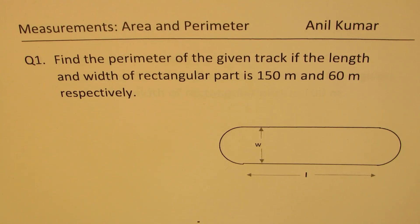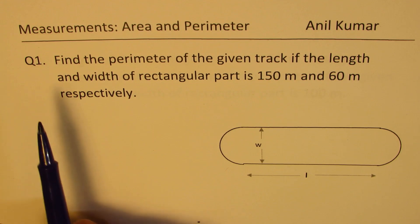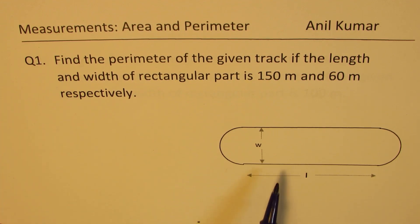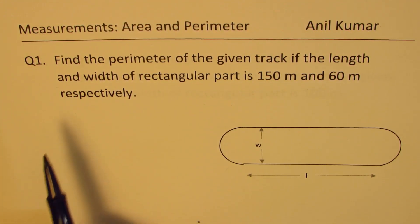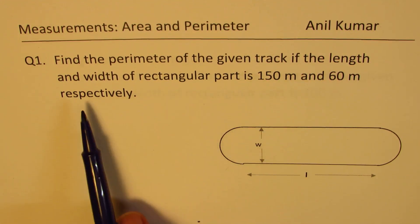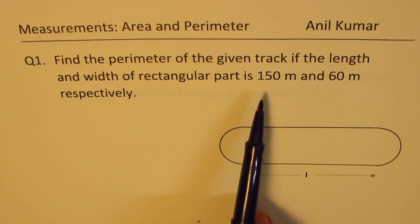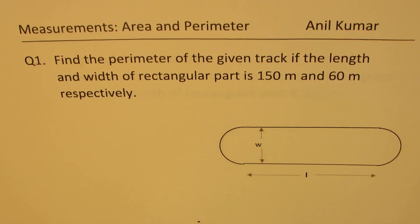I am Anil Kumar sharing with you a very interesting question from a previous test paper. It is based on measurements. We have five questions related to the same diagram. Question number one is: find the perimeter of the given track if the length and width of the rectangular part is 150 meters and 60 meters respectively.